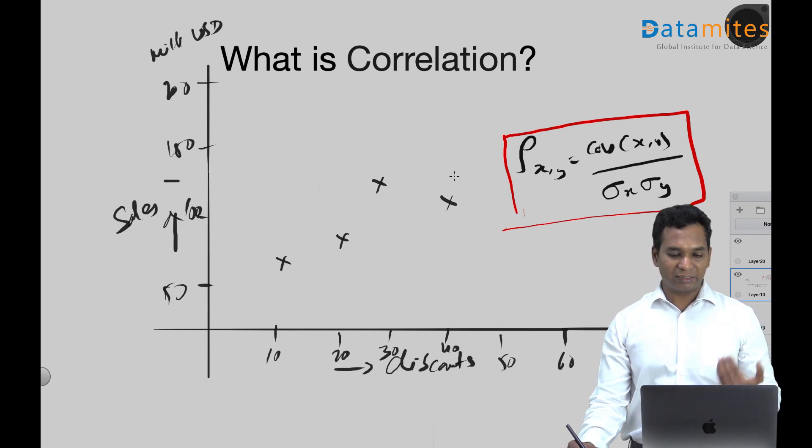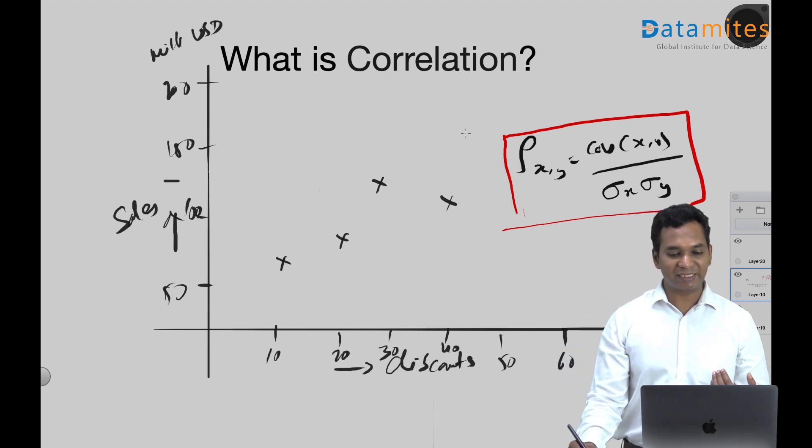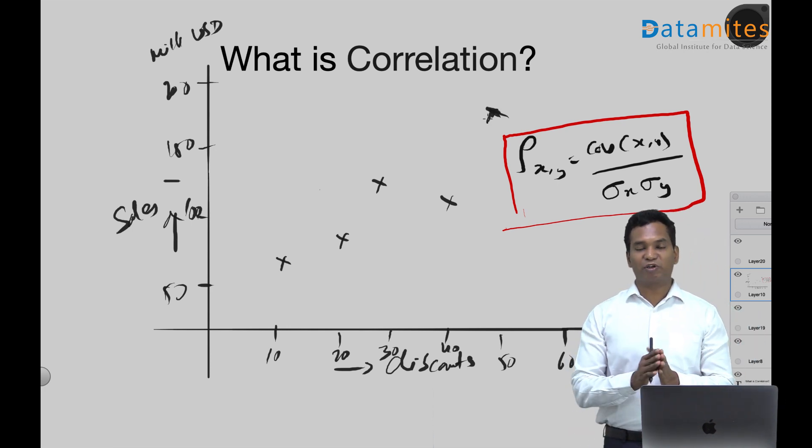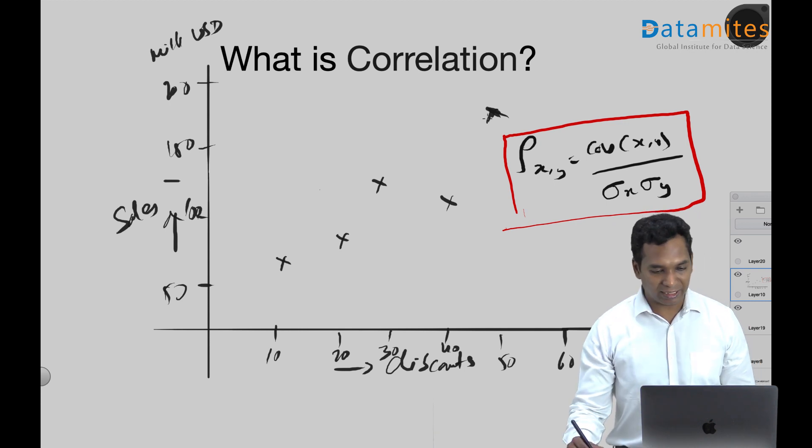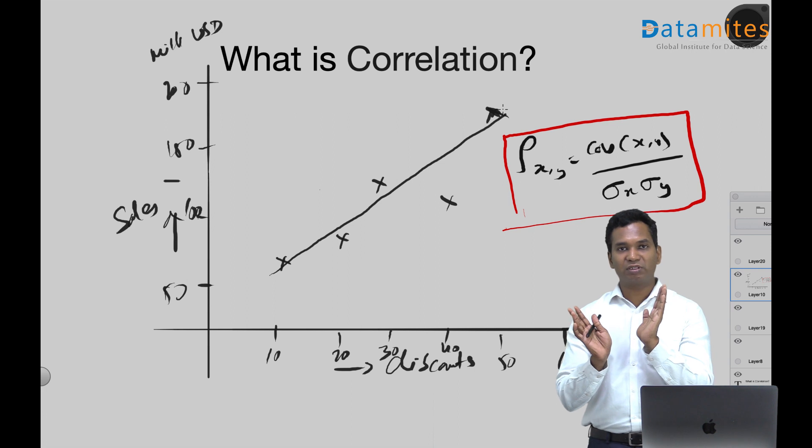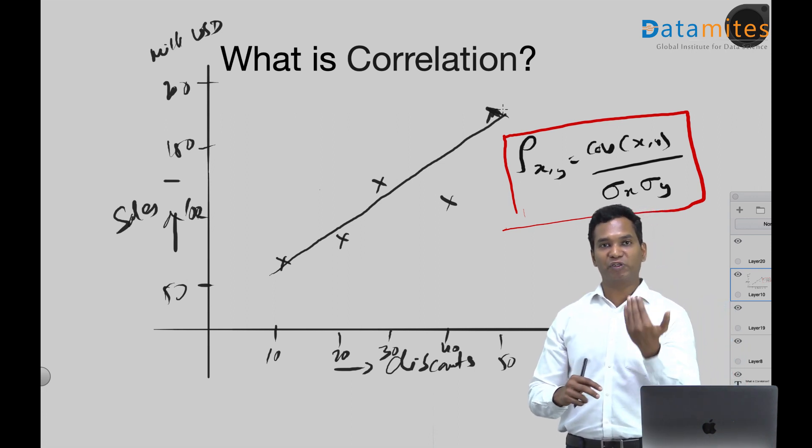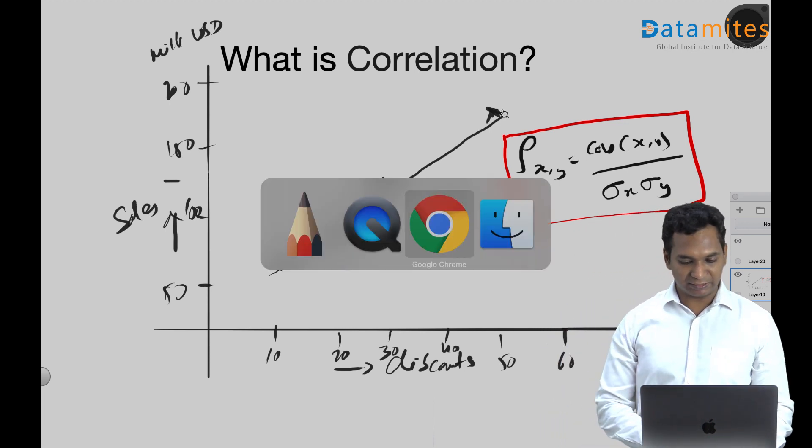There is an increasing trend between these discounts - they are actually positively correlated. This is what we call positively correlated. If you try and draw a line, you see that the sales and discount have a positive relation, which means one increases, the other also increases. Let me do it on my theory.